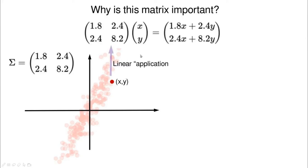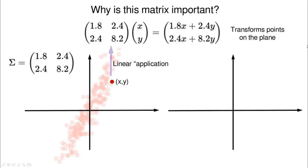Let's take this matrix and see what happens if we multiply it by a simple point X, Y. This is a linear transformation because we are multiplying one coefficient by the first element, the second by the second element, and so on. The result is another point with different coordinates, so this matrix is transforming points in the plane to other points in the plane.